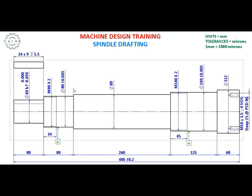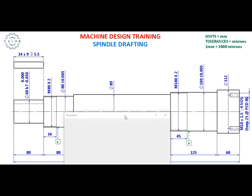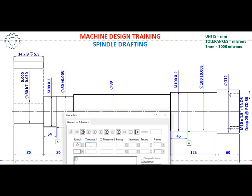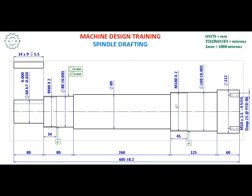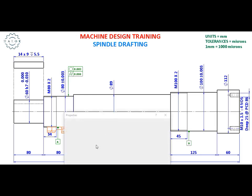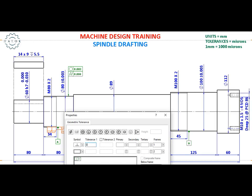Now we are going to apply the geometrical tolerances, starting from the first bearing-carrying portion. I am going to indicate to my manufacturer to maintain the circularity of that portion to be around 3 microns and the cylindricity to be around 4 microns. Coming to the adjacent step face, the side face of my bearing is going to bear against this step, so it is a must that we maintain the perpendicularity of this step. I am going to indicate to the manufacturer to maintain the perpendicularity of that step to be 4 microns with respect to datum A.